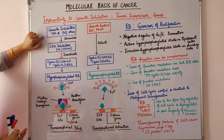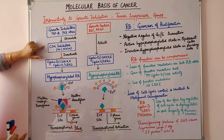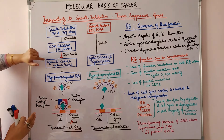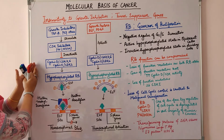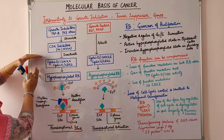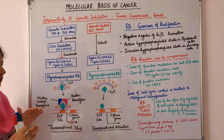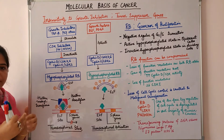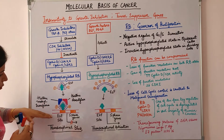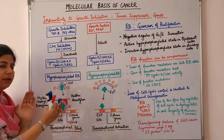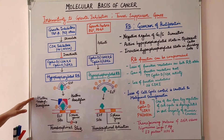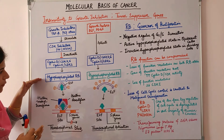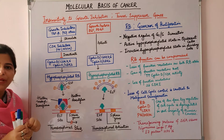Growth inhibitors such as TGF-beta and P53 stimulate the CDK inhibitors, which inactivate the cyclin D-CDK complexes — cyclin D/CDK4, cyclin D/CDK6, and cyclin E/CDK2. These complexes phosphorylate RB. When they are inhibited, RB remains in the hypophosphorylated state and binds to the E2F transcription factor, sequestering it. This complex binds to DNA and recruits chromatin-modifying factors such as histone deacetylase and histone methyltransferase, which inhibit transcription of S phase genes. In the hypophosphorylated state, RB applies brakes to cell cycle progression.